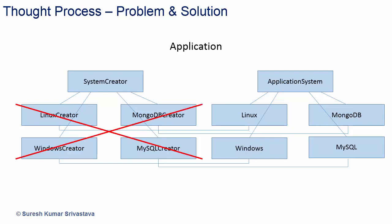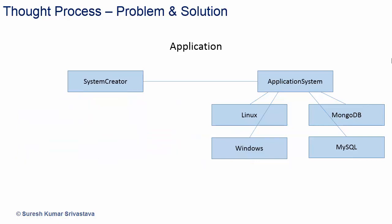It will make the design complex, and we want to avoid this complexity. We will delegate the object creation responsibility using composition instead of subclassing. So we will have an application system class, and different types of systems like Linux and MongoDB will be inherited from application system. System creator will have an instance of application system, so it will be able to create different systems like Linux and MongoDB.